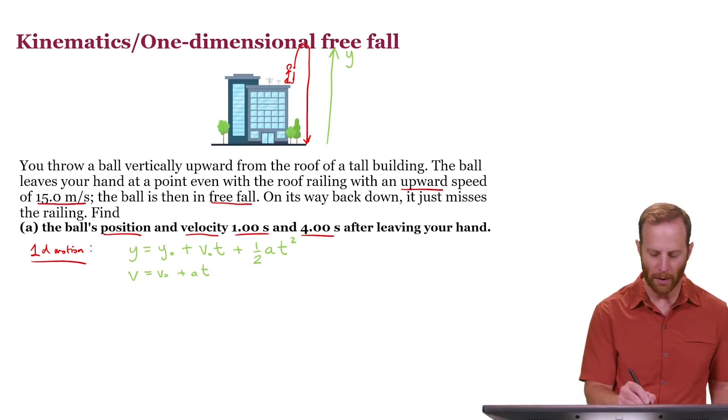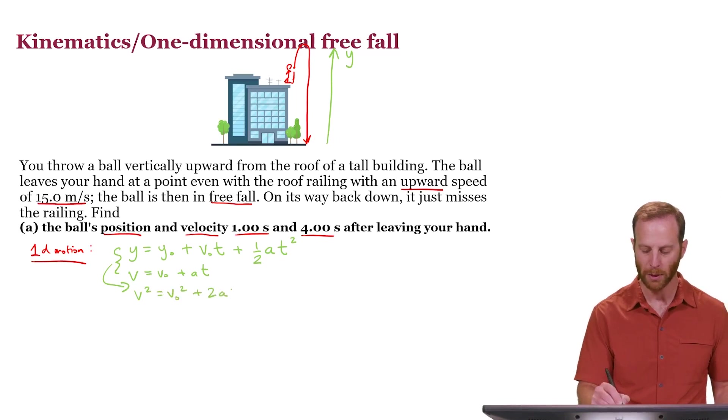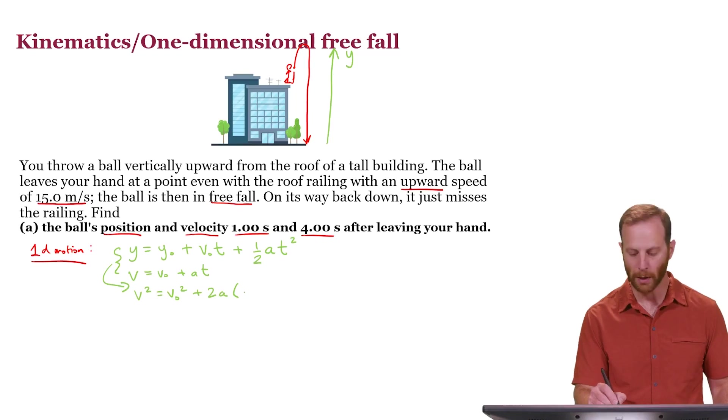You can derive a third equation if needed and sometimes that's useful. You can derive a third equation that doesn't depend on time and that looks like this: v squared is equal to v0 squared plus 2 times the acceleration times the change in y which I can write as y minus y0.